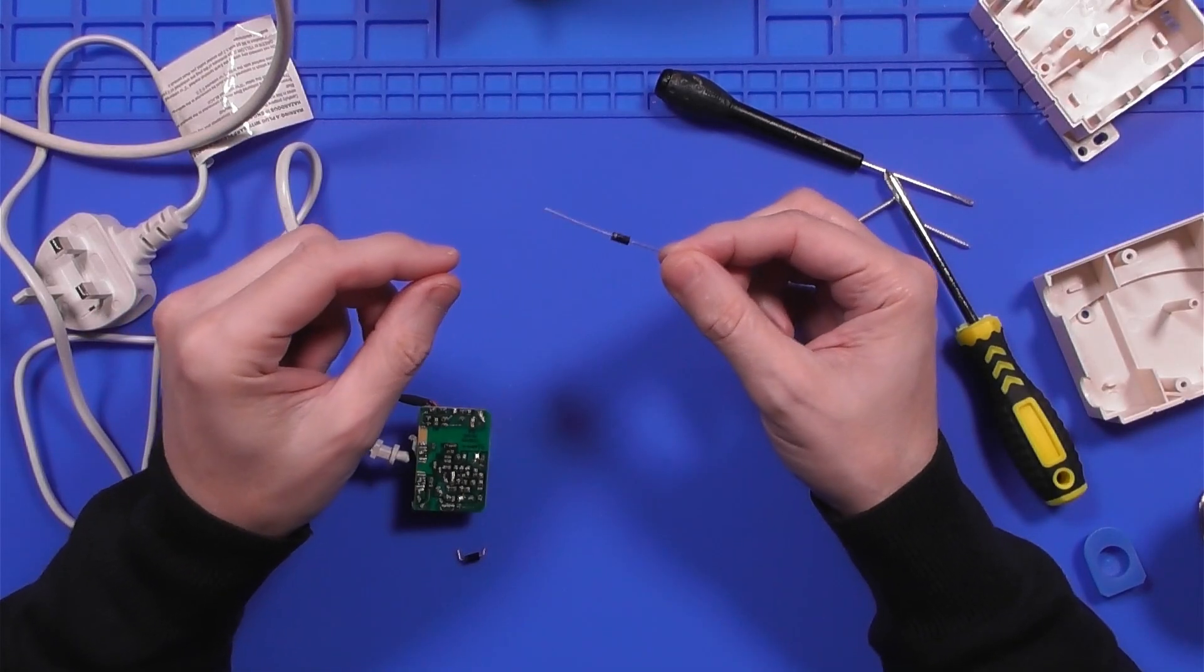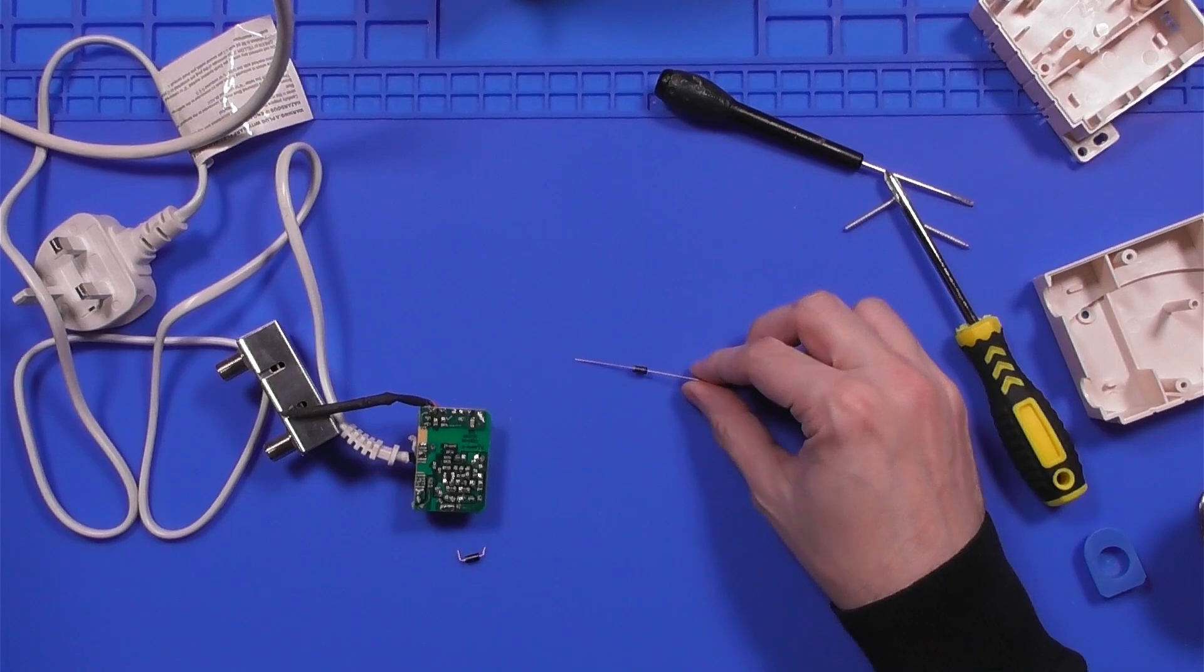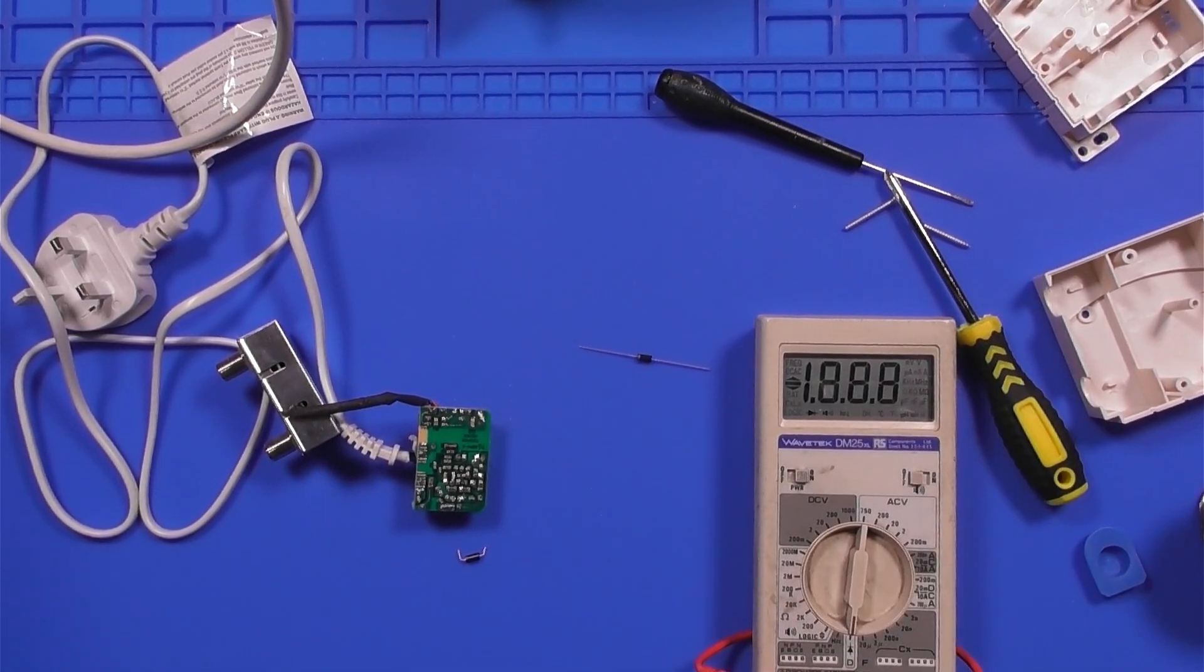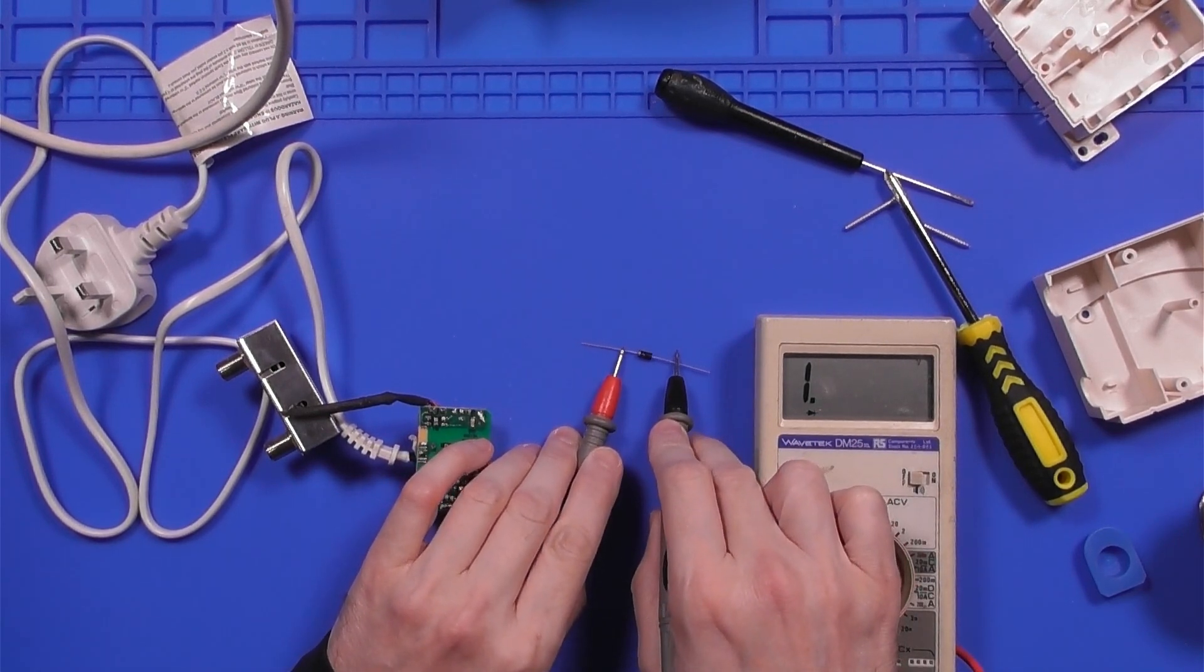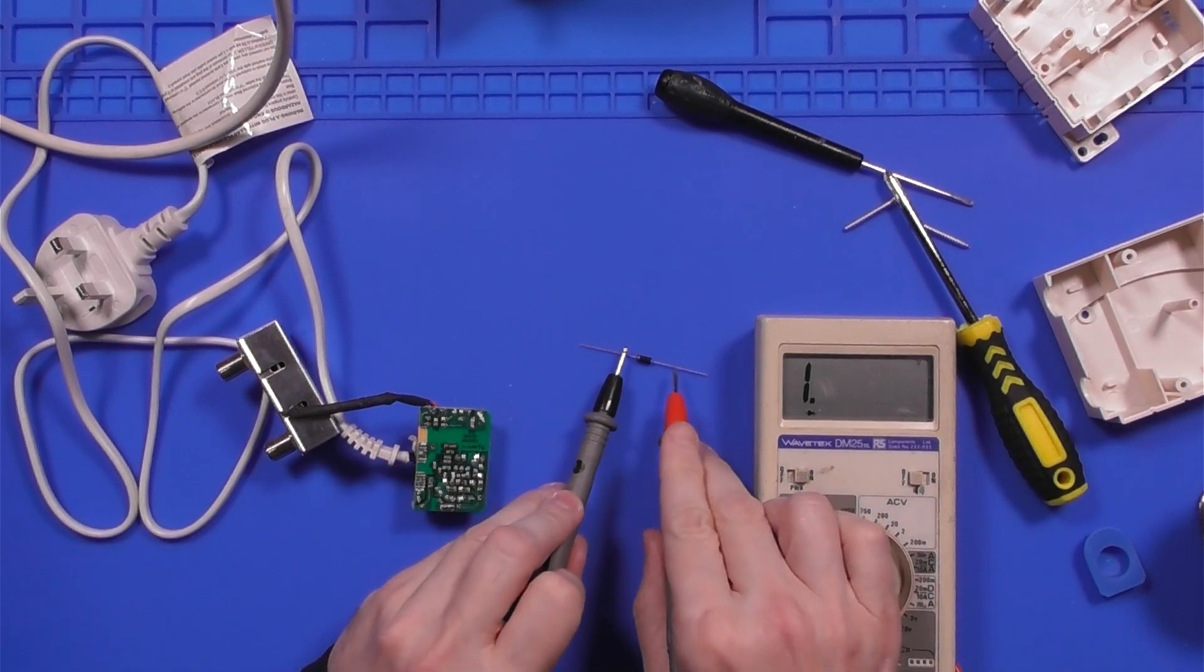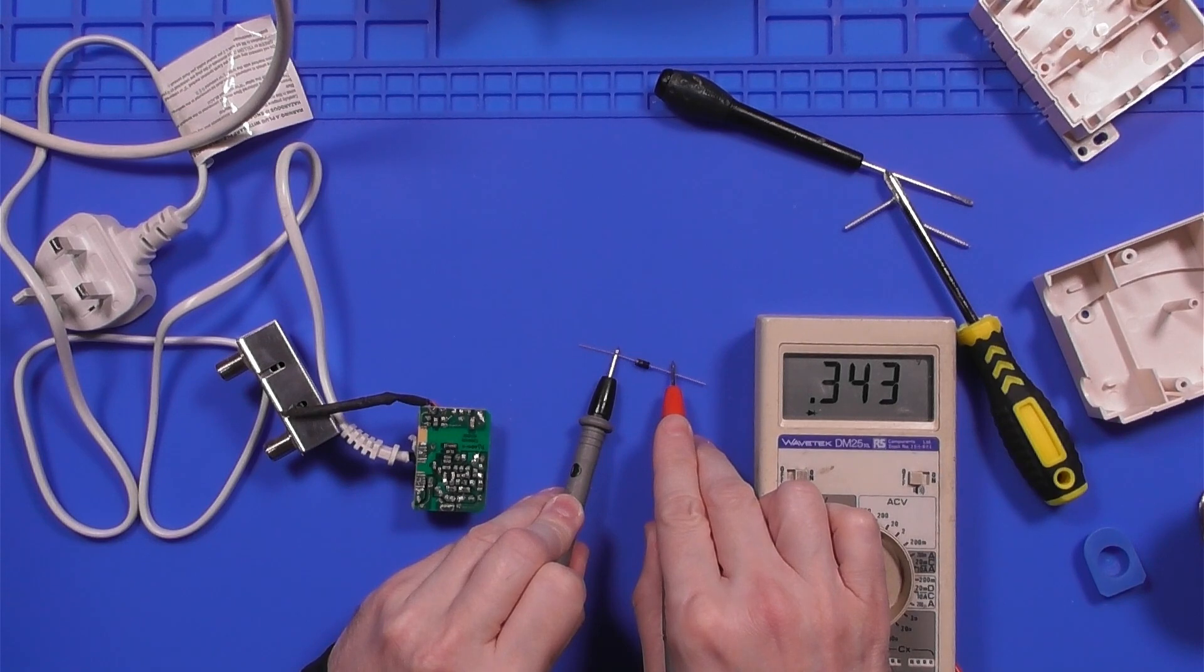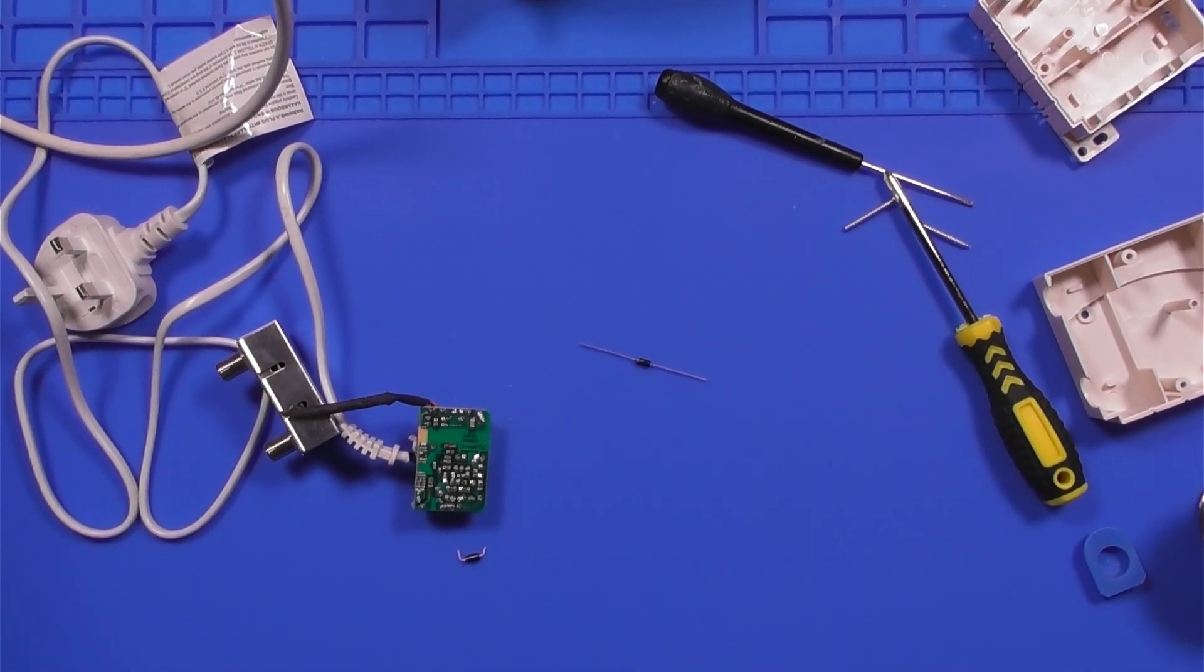Okay, so the new diode has arrived. Let's get the tester on this and see if this one is any different. It's in diode mode. So that's open. 0.34, which is more like what I would expect. Let's get this into the circuit and see if that makes a difference.